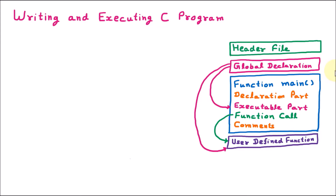On the right hand side, we have the structure of the C program where we know that the main driving function is main. Whenever you start with the program, first of all you should know that we will write void main. Main is a function, that's why after main we will provide starting and closing brackets. Whenever you find the starting and closing bracket, you understand that this is a function.